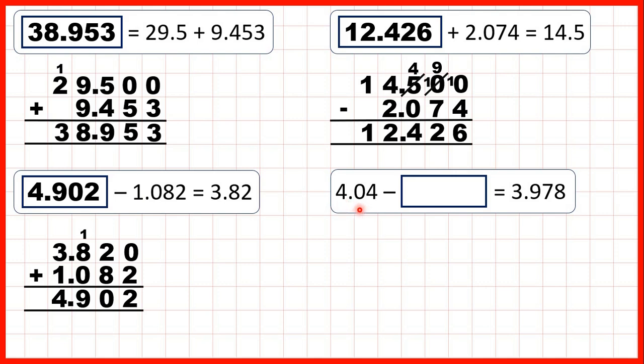Finally, 4.04 minus something equals 3.978. So this time it's the second number in our subtraction, so the subtrahend that's missing. When the subtrahend is missing, we still use subtraction to find our missing number. So we need to work out 4.04 minus 3.978, and that will give us our missing number.